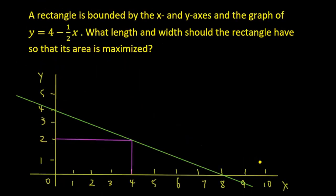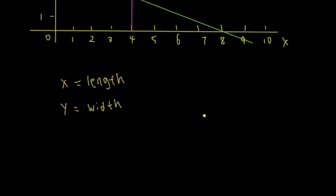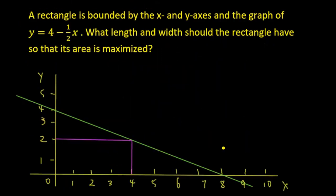Now, what's the area of the rectangle? We're looking for area, so we have to talk about the area formula. The formula for the area of a rectangle is length times width. So the area of the rectangle is length times width — the length is x, the width is y — so it's x times y.